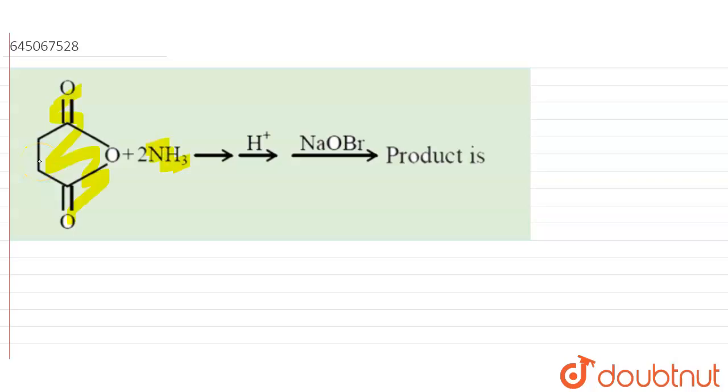An organic molecule is given which is treated with ammonia and further it is treated with H+ and NaOBr. What is the product formed? That is to be determined. So if you see the starting material which is given to us...